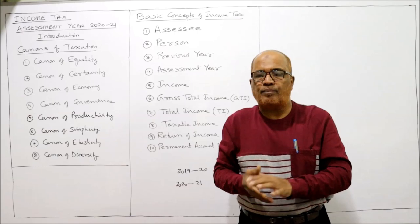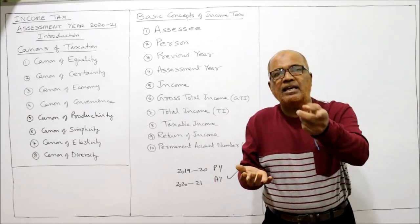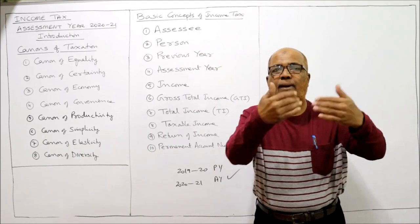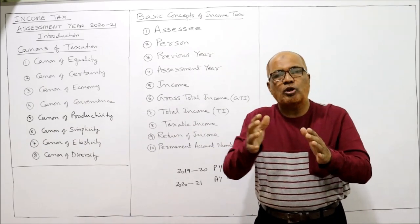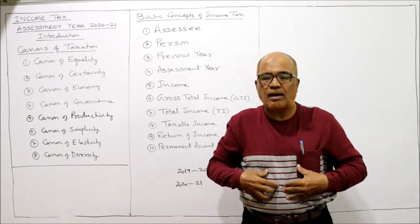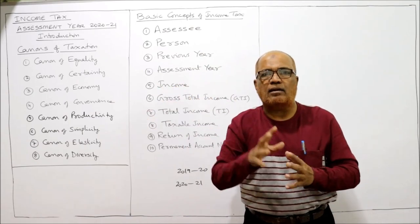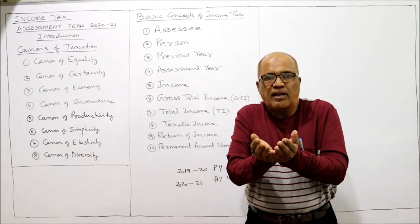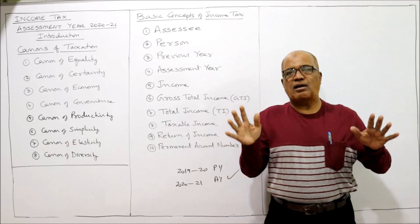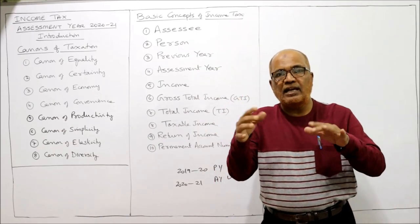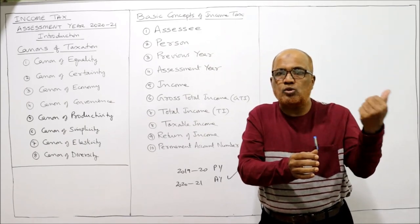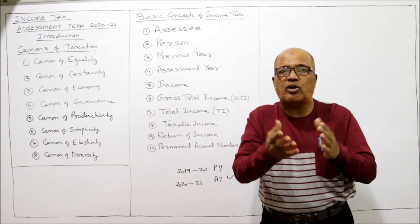Some important characteristics of income from court judgments: first, income received in cash or kind — both are taxable; if received in kind, it is converted into cash using income tax provisions. Second, income should be earned from outside — a person cannot earn income from himself; for example, pocket money given by a parent to a son is not income to the son. Third, the Income Tax Act is not concerned about the legality of income — even illegal income is taxable.